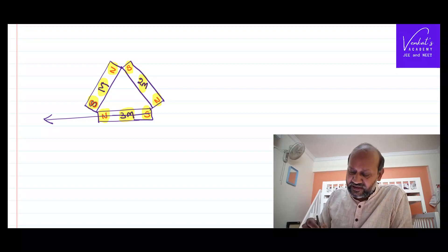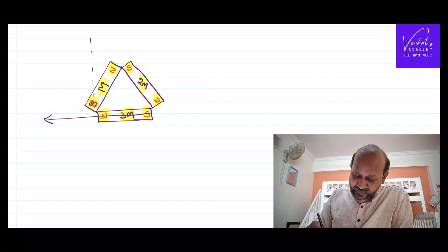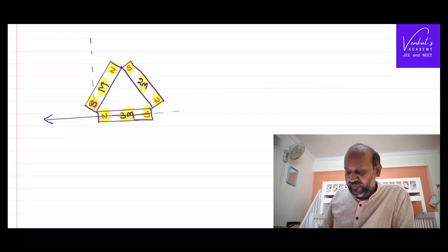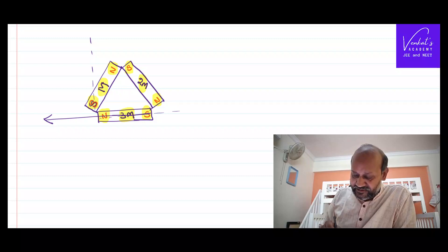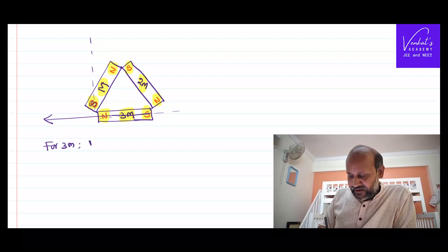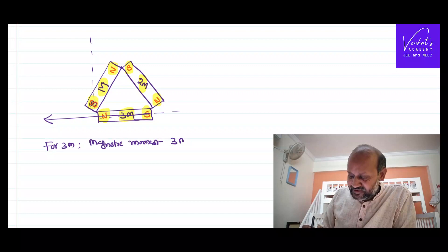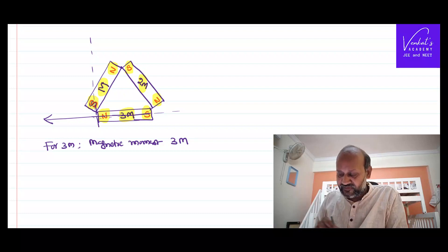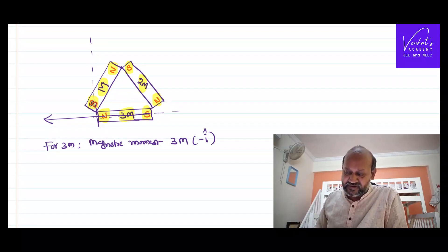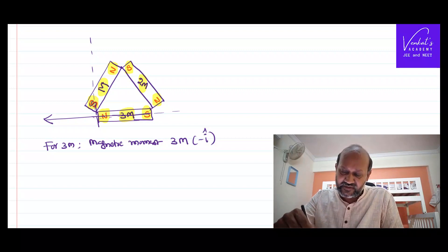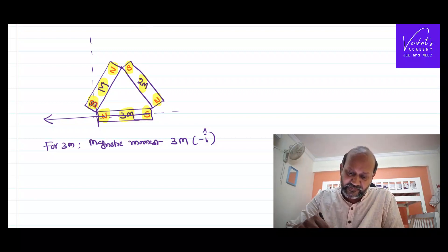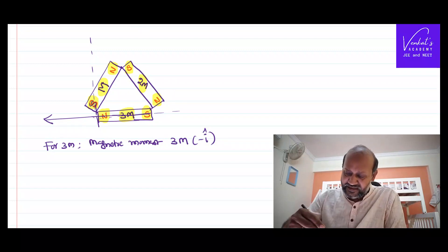If I take any imaginary system along the negative x-axis, I can write the first magnetic moment. The 3m magnet's magnetic moment can be expressed as minus 3m î, because it's going towards the negative side of the x-axis. That's for the 3m magnet.